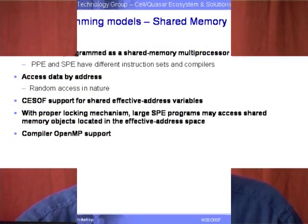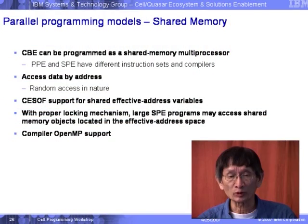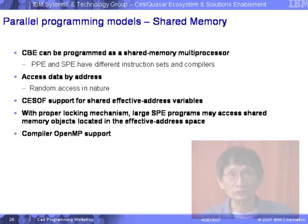We use OpenMP here to provide parallelism for SMP systems where we connect those BE-7E processors together. We also use MPI — message passing interfaces — protocols to support clustering. Both OpenMP and MPI will be available in the SDK 3.0.